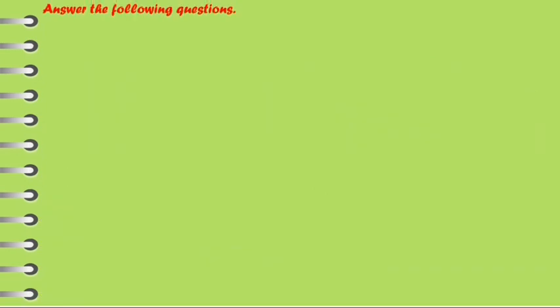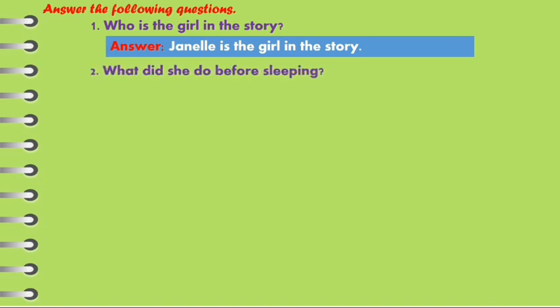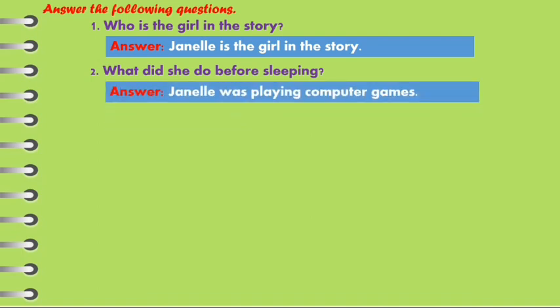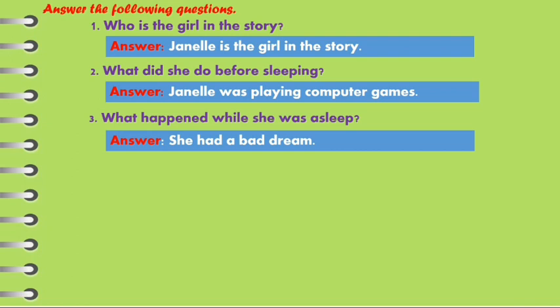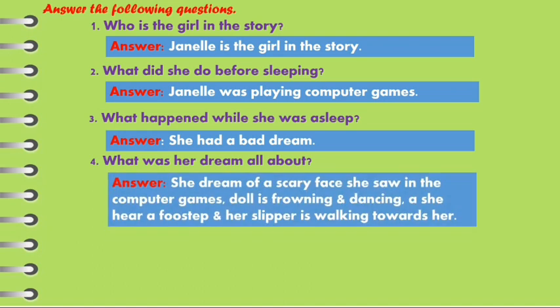Now, let's try to answer the following questions based on the story. First question: who is the girl in the story? Janelle is the girl in the story. Second question: what did she do before sleeping? Janelle was playing computer games. Third question: what happened while she was asleep? She had a bad dream. Fourth question: what was her dream about? She dreamed of a scary face she saw in the computer games. Her doll was throwing and dancing, and she heard footsteps with her slippers walking towards her.